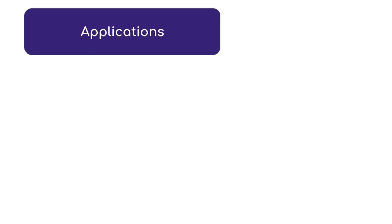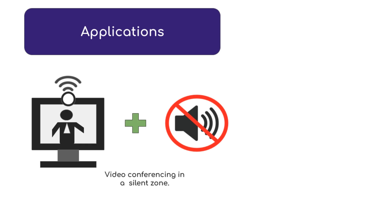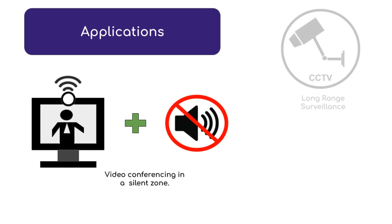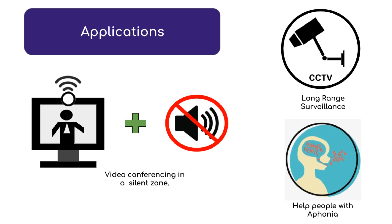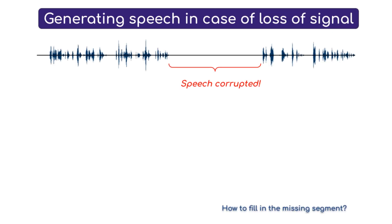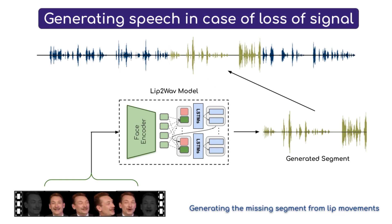Our work opens up several applications such as video conferencing in silent environments, long-range listening for surveillance, and generating a voice for people who cannot produce voiced sounds due to aphonia. Before we end this demonstration, we show a final interesting application of our system. In the event of speech corruption, our model can seamlessly generate and fill in the missing segments solely from the lip movements.